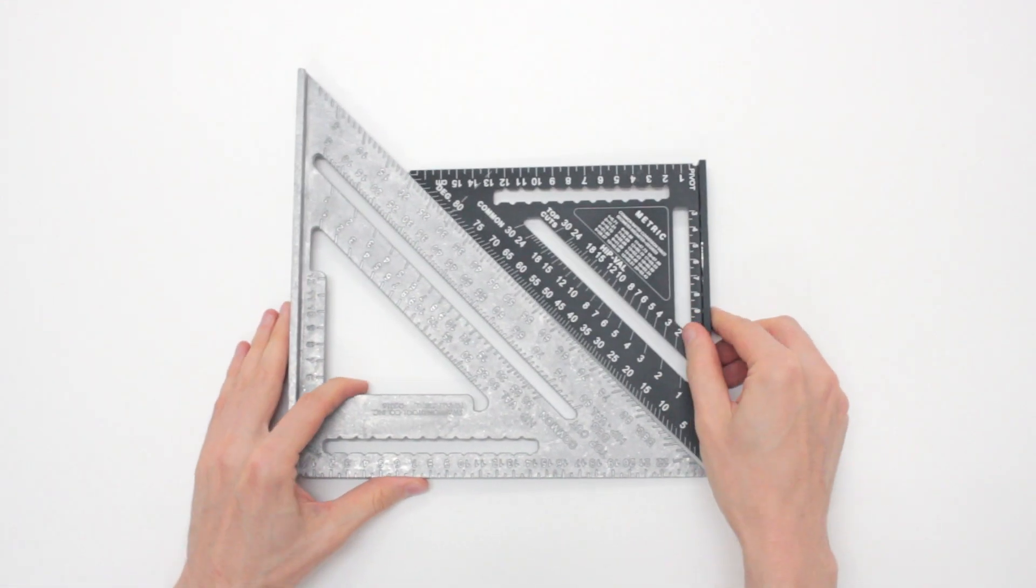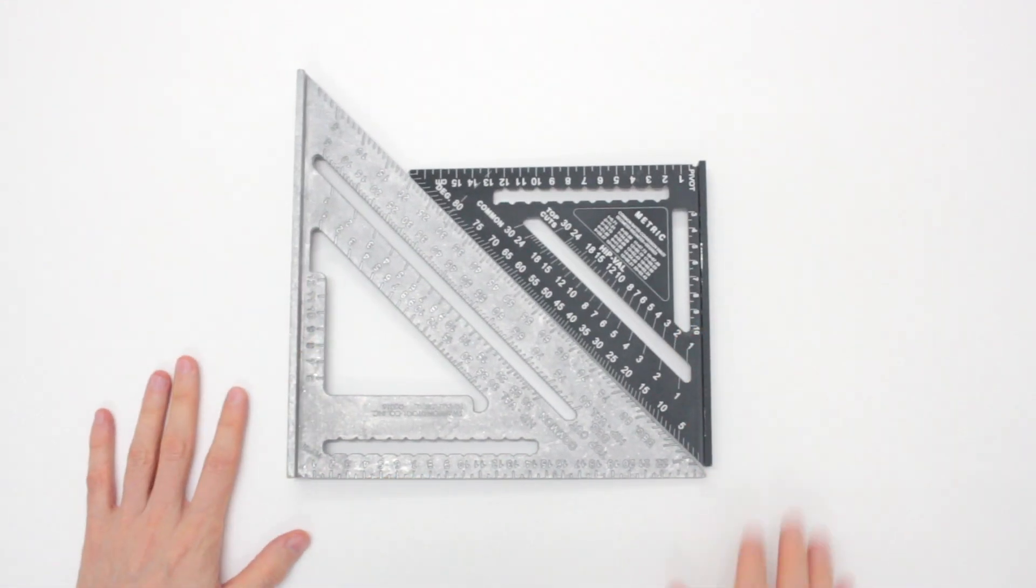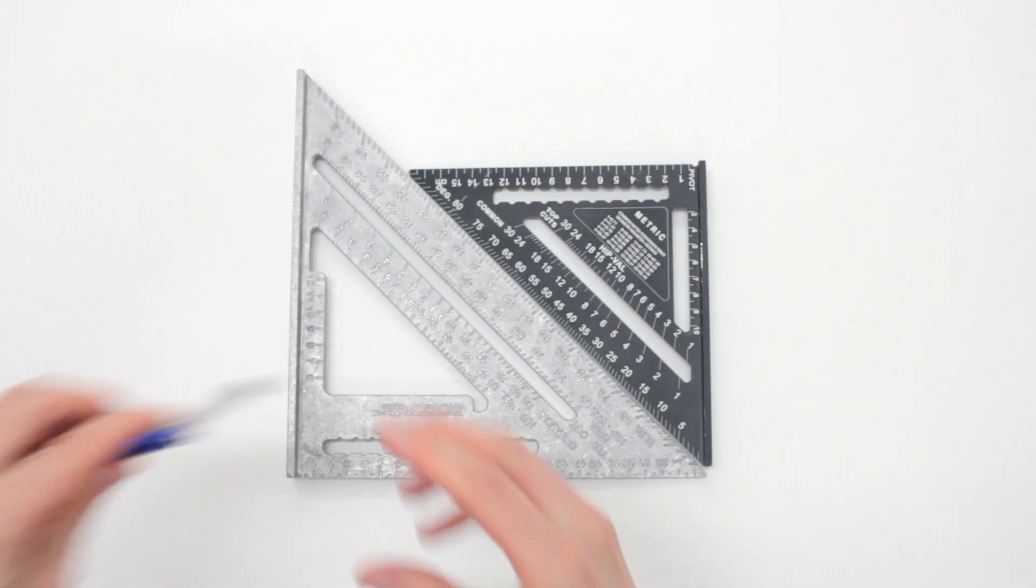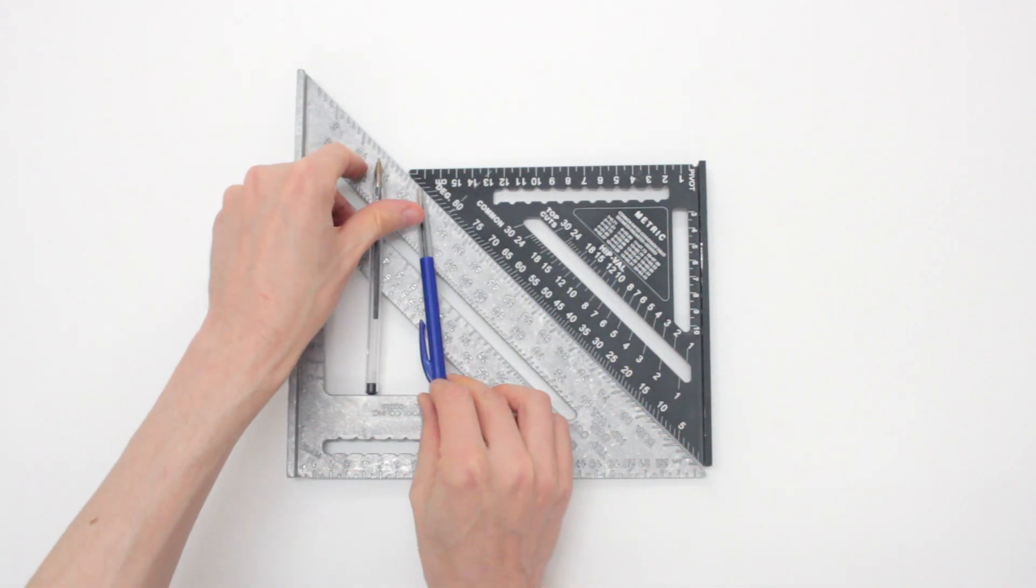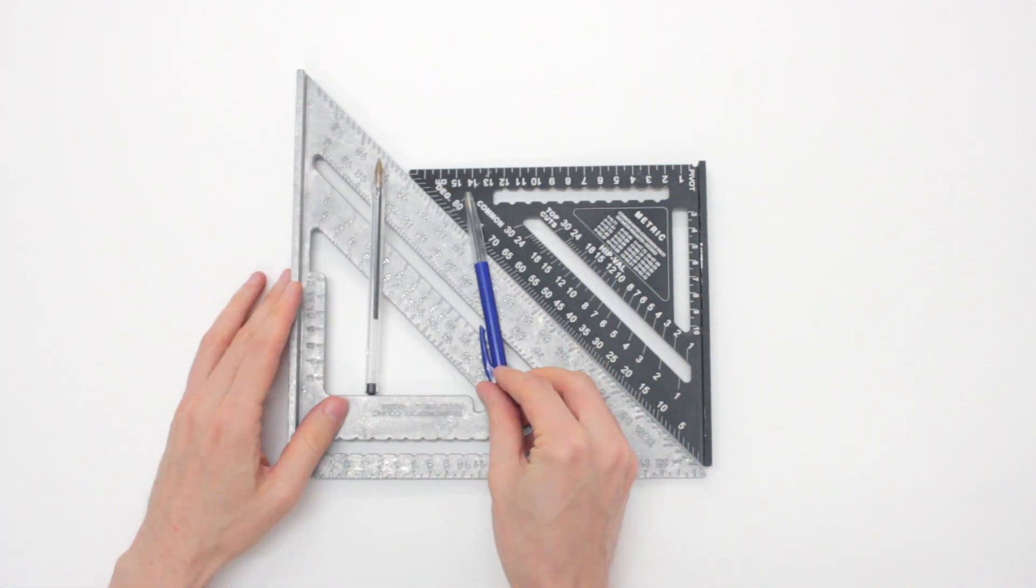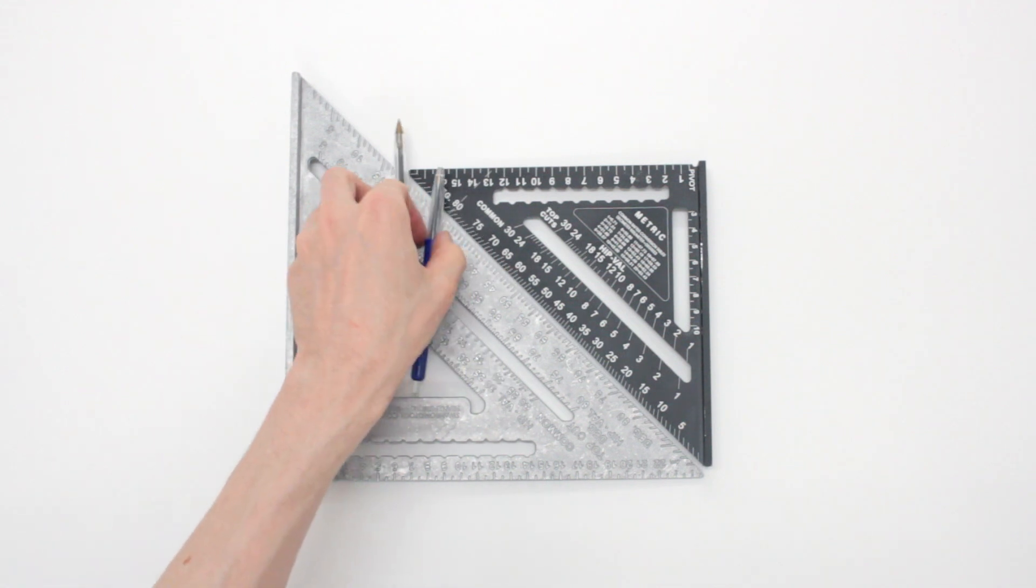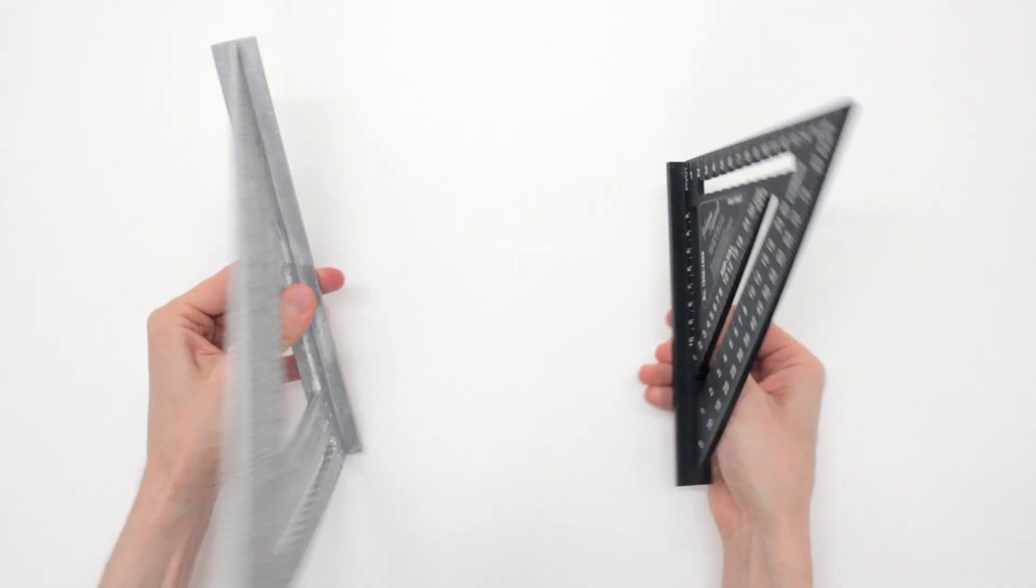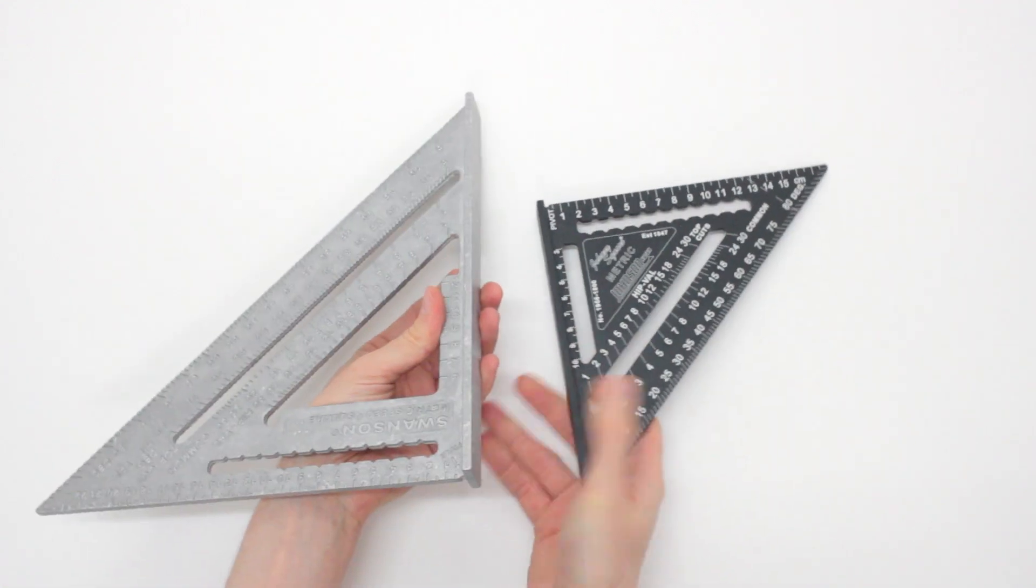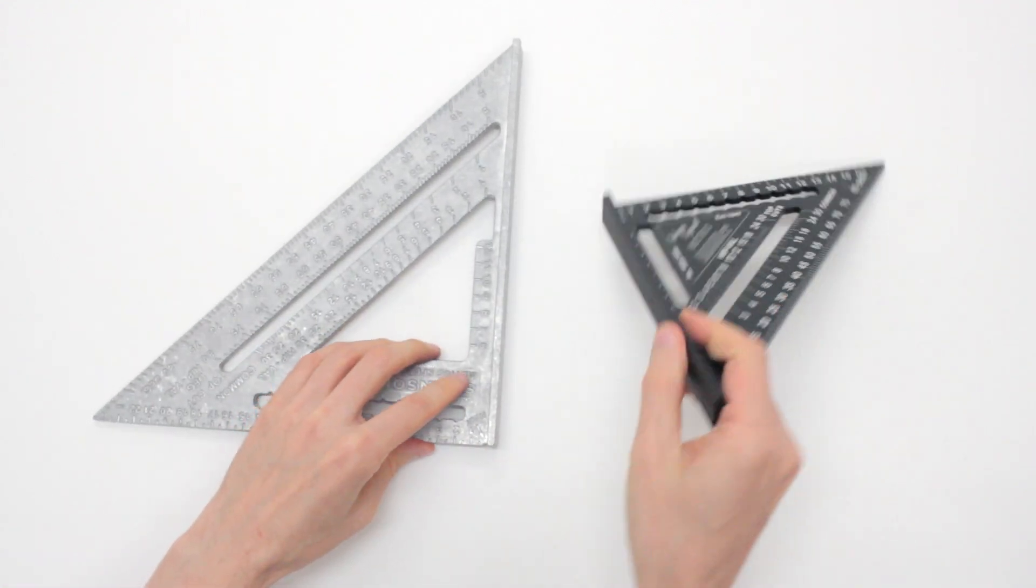As you can see, the size difference is quite something, quite pronounced for your comparison with standard pick pens. So, the Swanson, because it's bigger, it's heavier side to side like this.